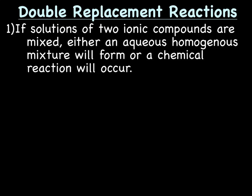Today's essential question, which remember you need to answer fully in your summary: How are the products of double replacement or displacement reactions determined? Please make sure you have your periodic tables and your polyatomic ion charts handy. Let's do this. Double replacement reactions, or double displacement reactions. If solutions of two ionic compounds are mixed, one of two things will happen. Either an aqueous homogeneous mixture will form, or a chemical reaction will occur.